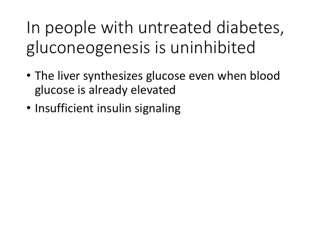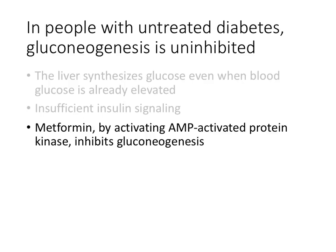This becomes important when we think about diabetes. When people have untreated diabetes, gluconeogenesis is uninhibited. Diabetes mellitus results when either there's not enough insulin, or not enough insulin to overcome insulin resistance in tissues. So when somebody has untreated diabetes, the liver synthesizes glucose out of control — even when blood glucose levels are high, the liver dumps glucose into the blood. Metformin, one of the most common drugs used to treat type 2 diabetes, functions at least partly by activating AMP-activated protein kinase in hepatocytes to inhibit gluconeogenesis.